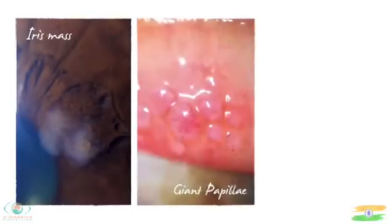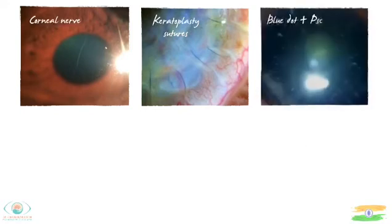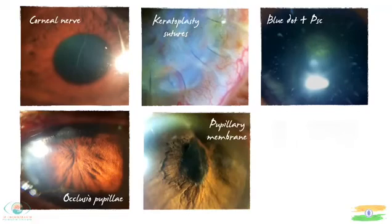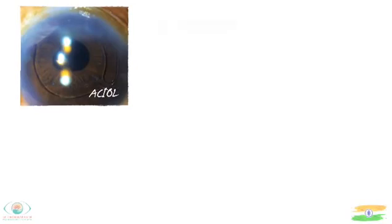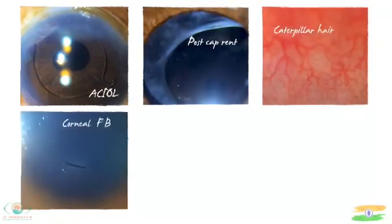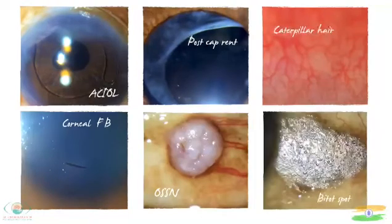Here are few images taken from ASPE: iris mass, giant papilla, neovascularization of cornea, corneal nerves, keratoplasty sutures, nuclear cataract posterior subcapsular, anterior capsular membrane, hypopyon, AC IOL, posterior capsular opacification, caterpillar head, corneal foreign body, OSSM, and white dot spots.